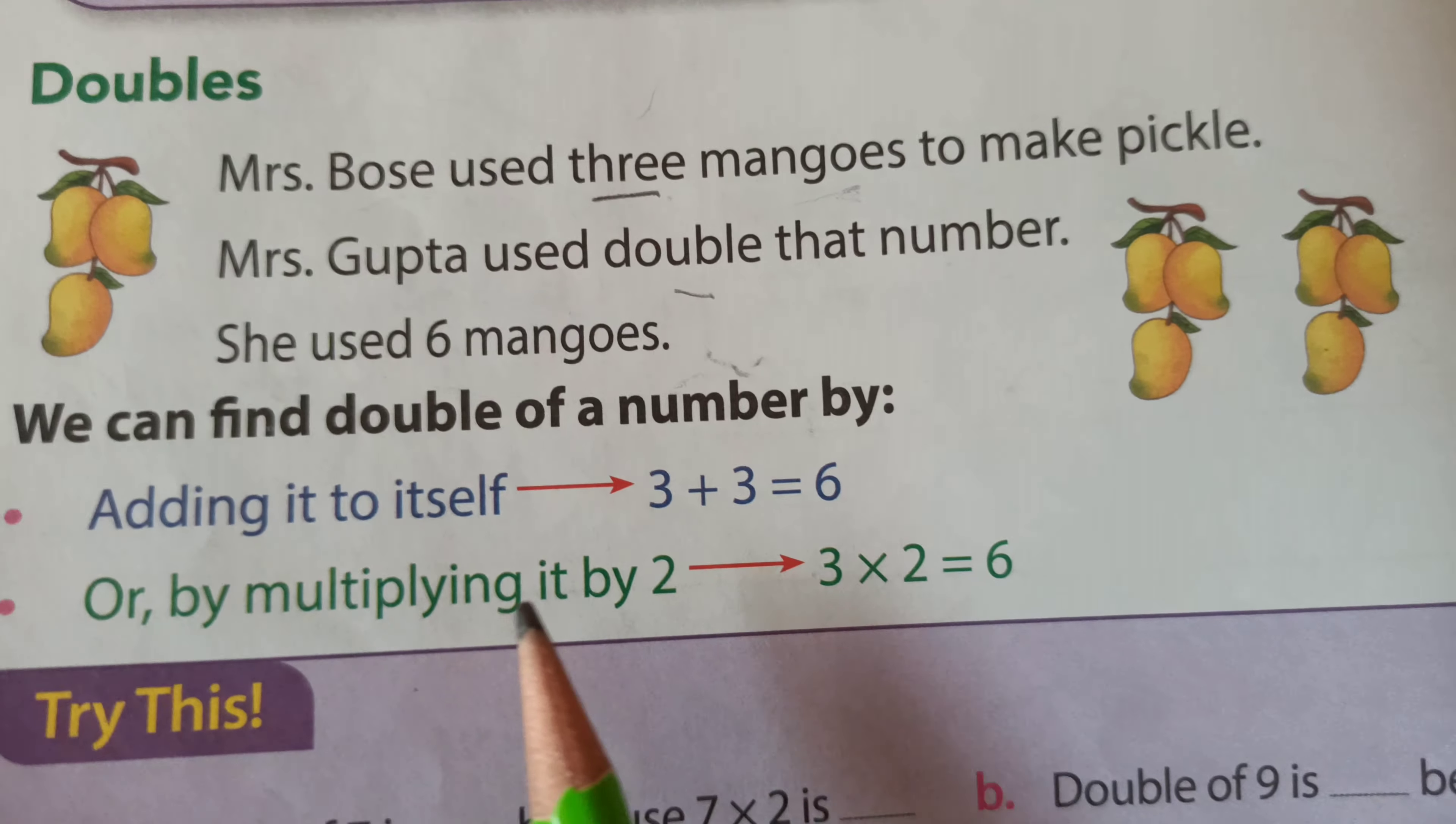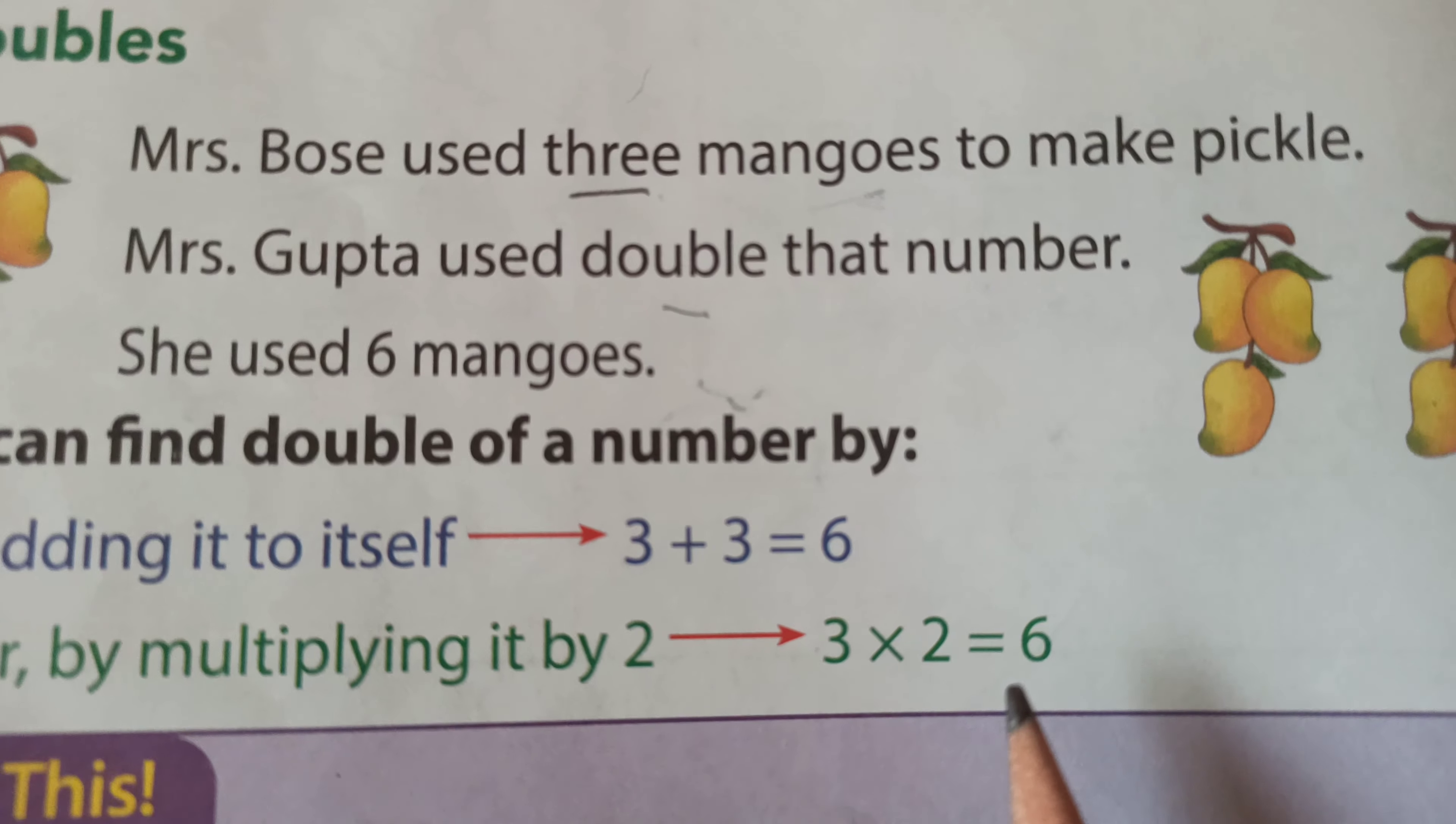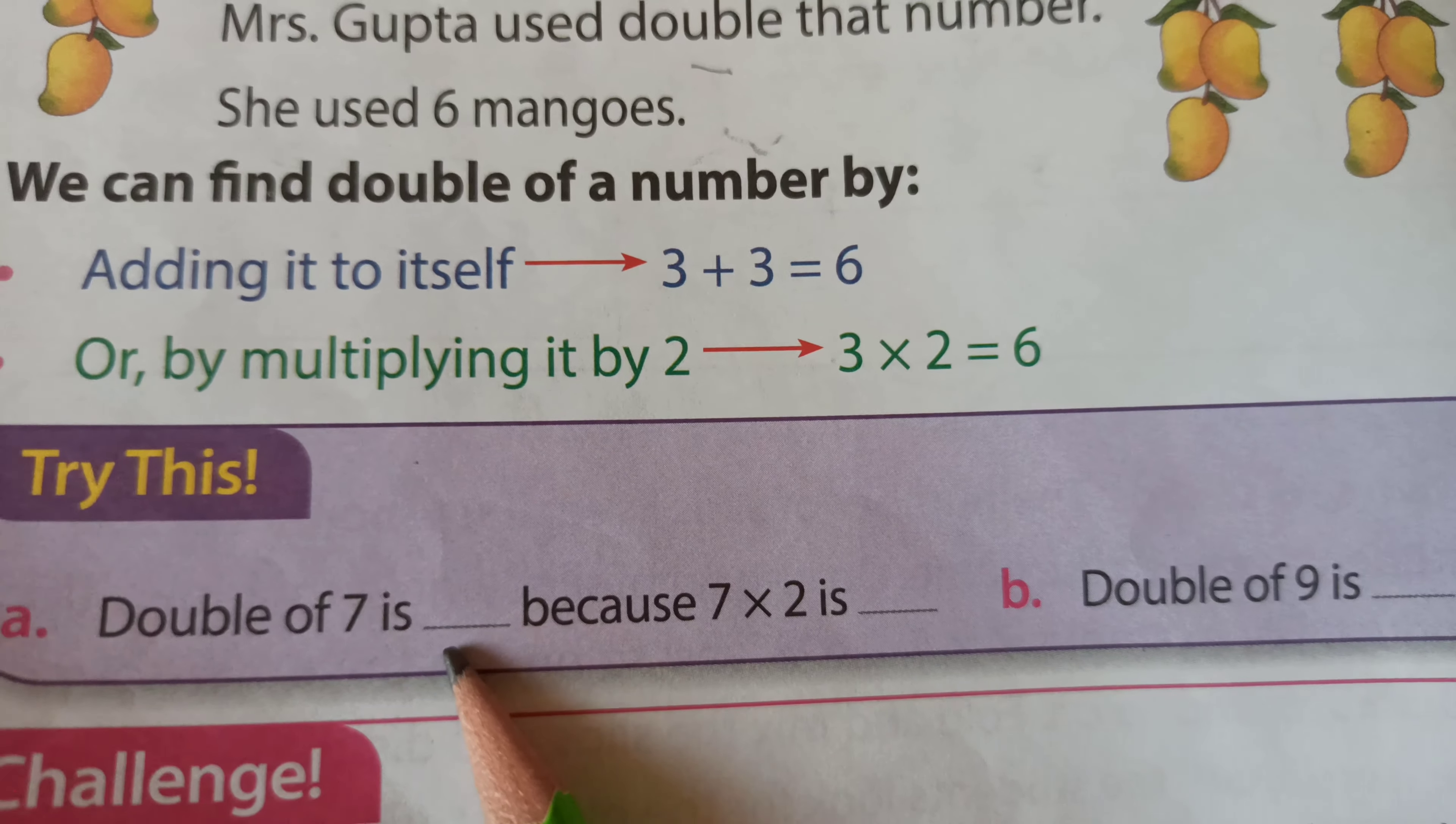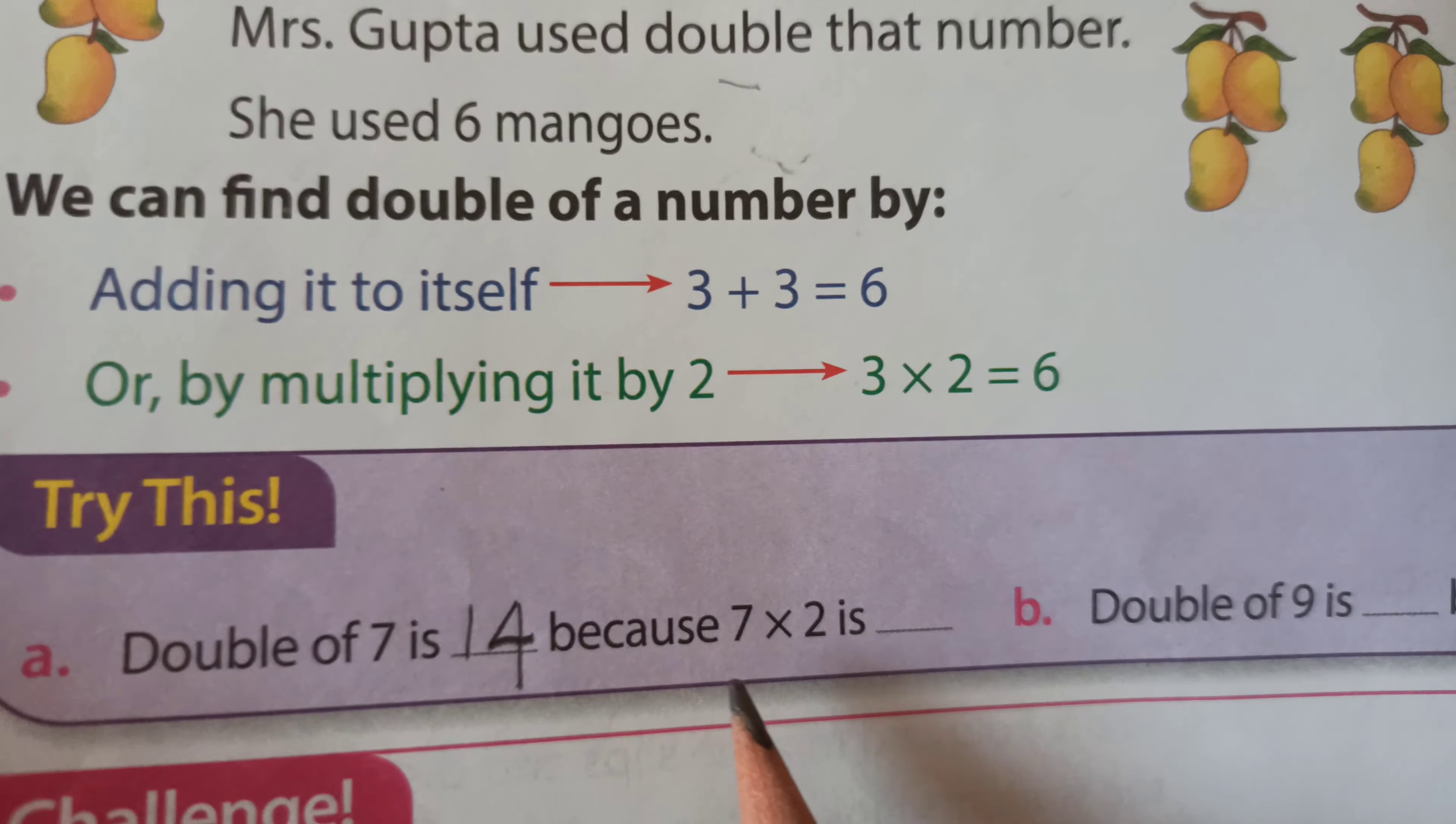For example, 3 plus 3 equals 6. Or by multiplying it by 2: 3 multiplied by 2 equals 6. 3 twos are 6.